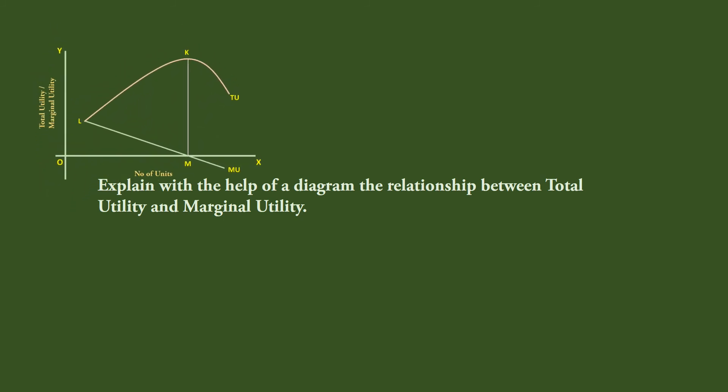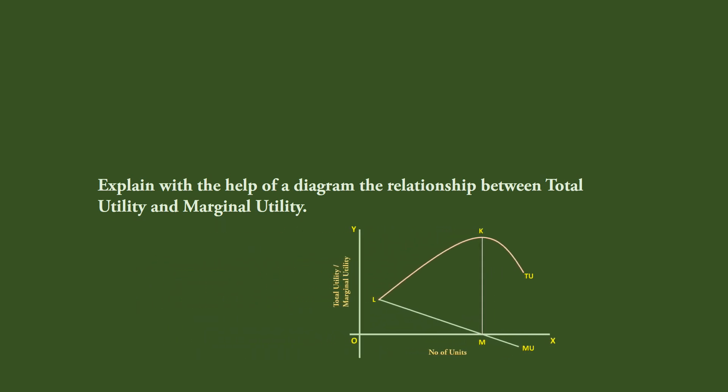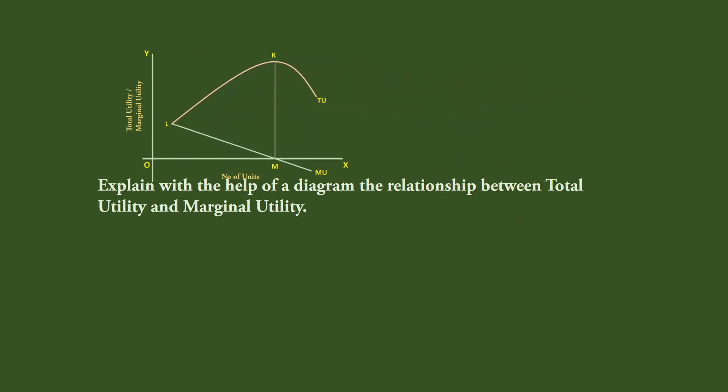While drawing the graph, keep in mind marginal utility takes positive and negative values. Hence we are going to use the first and fourth quadrants. Draw the two axes accordingly.